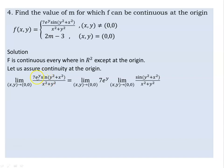The expression is 7 to the power of 5 times sine of (y squared plus x squared), over x squared plus y squared. This is the limit we need to evaluate as we approach the origin.